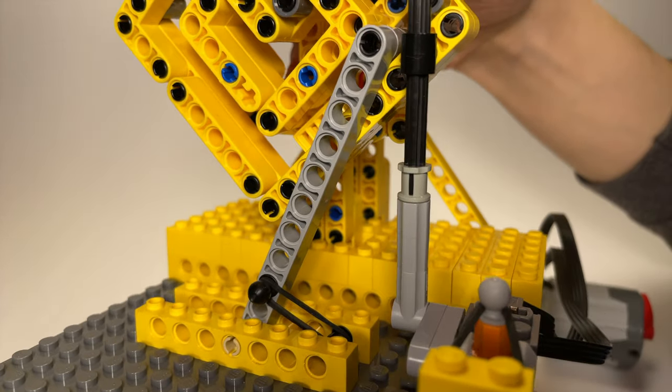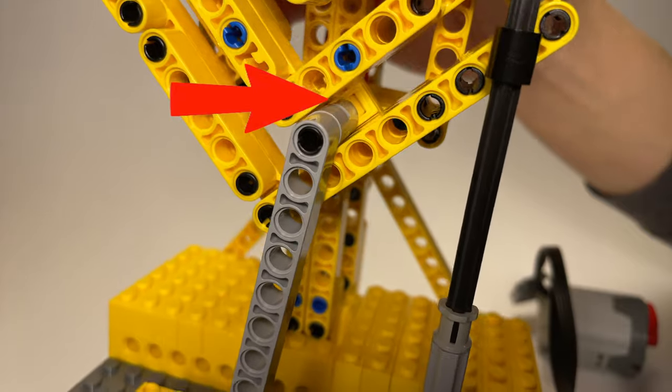One of the most important parts of the system is this yellow slope here. Its job is to reset the whole mechanism.